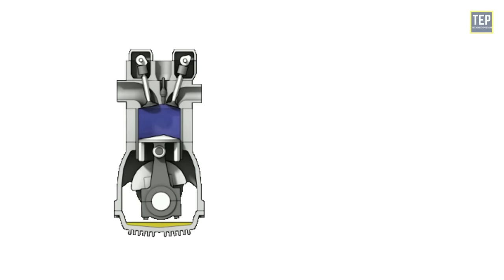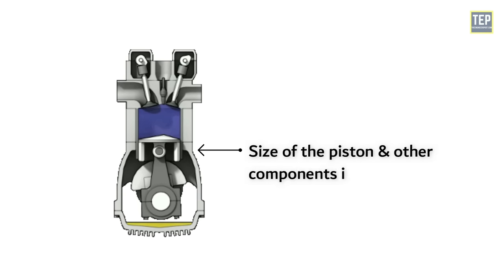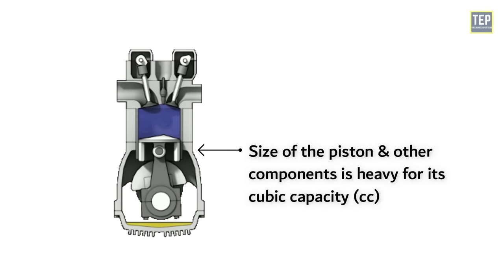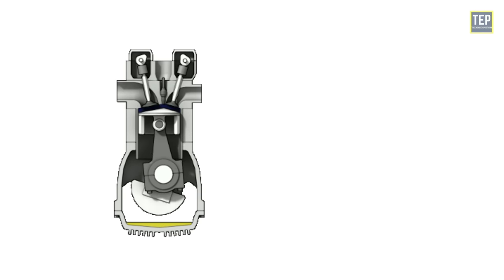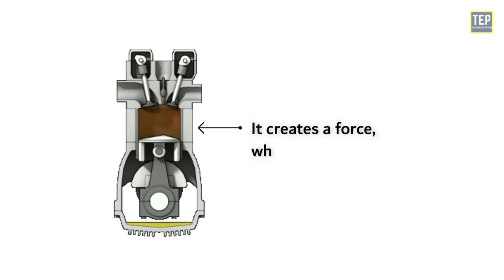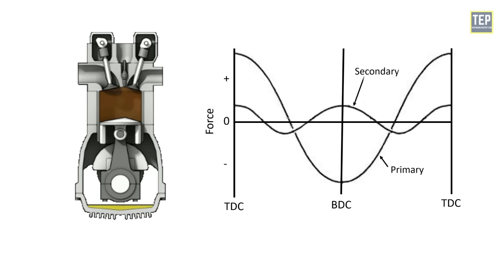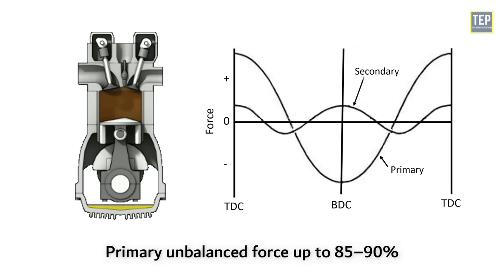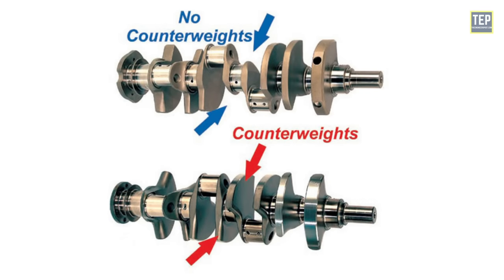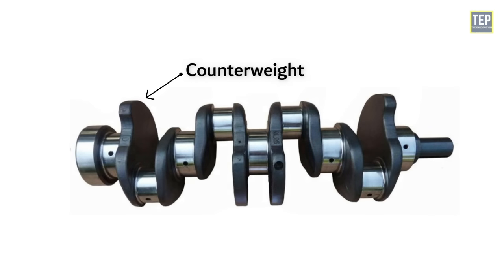In a single cylinder engine, the size of the piston and other components is heavy for its cubic capacity. As the piston goes up and down in the cylinder, it creates a force which isn't often balanced. The primary and secondary unbalanced forces remain in the engine, causing vibration. A fraction of the primary unbalanced force — up to 85 to 90 percent — is balanced by providing counterweights on the crankshaft, generally located at the end of the connecting rod.